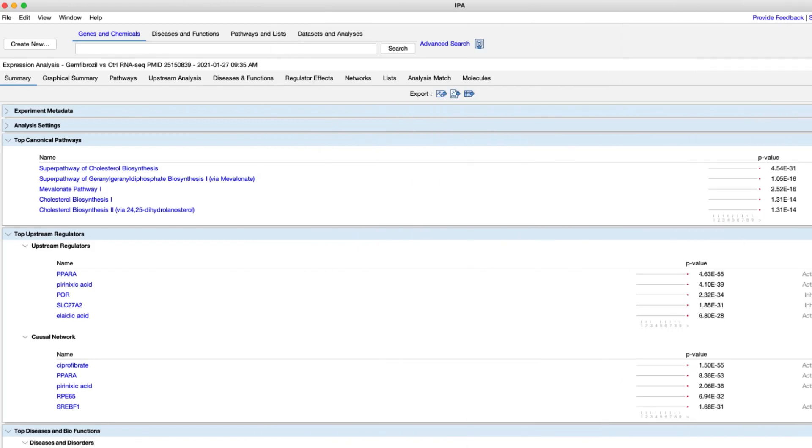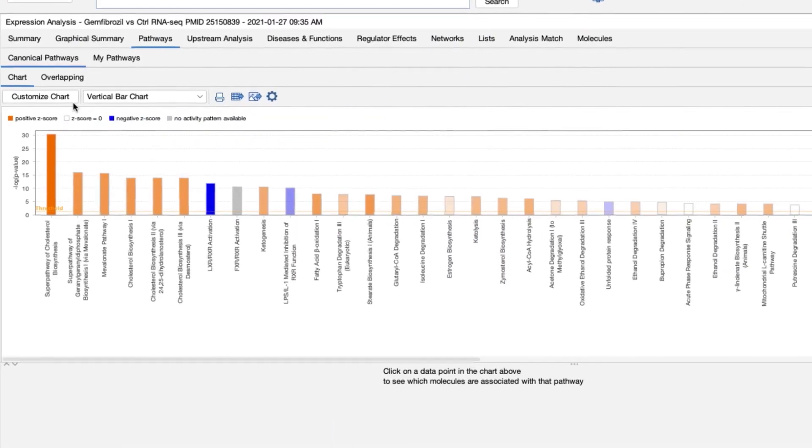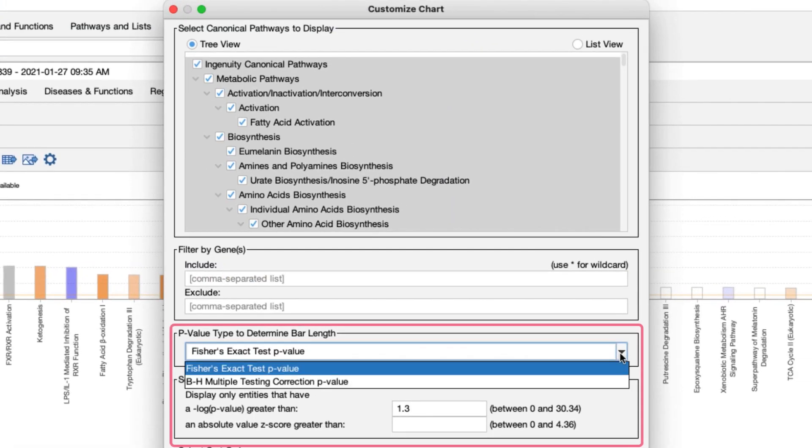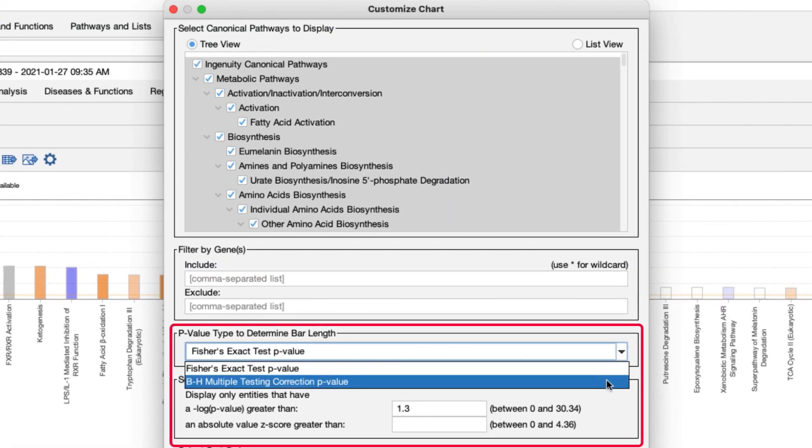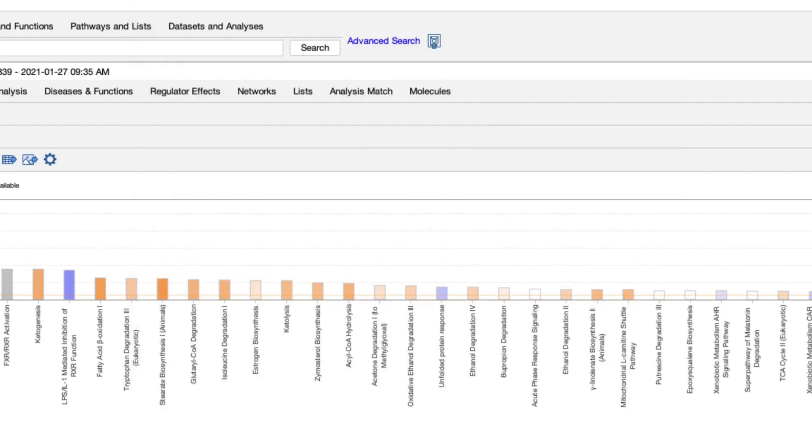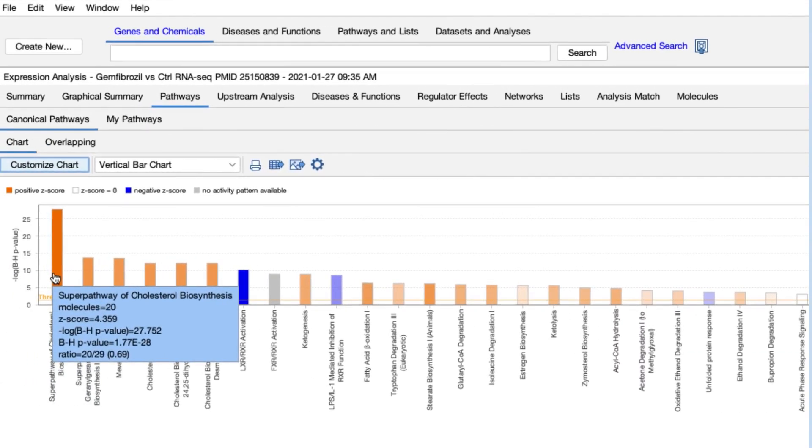Next, you can allow IPA to use the Benjamini-Hochberg method to adjust the p-values in your core analysis results. You can correct the canonical pathway's p-values by going to the Customize Chart button and changing the Fisher's Exact Test option to the BH Multiple Hypothesis Correction p-value. Then, when you hover your mouse over the canonical pathway bars, the BH adjusted p-values will appear.